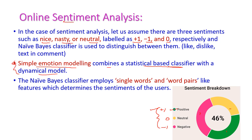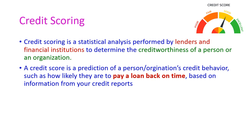The Naive Bayes classifier employs single words and word pairs as features to determine the sentiments of the user. For example, clicking the like button may be +1, dislike may be -1, and not clicking anything may be neutral (0). Similarly, based on the text in a comment, the system can analyze whether the sentiment is nice, nasty, or neutral.